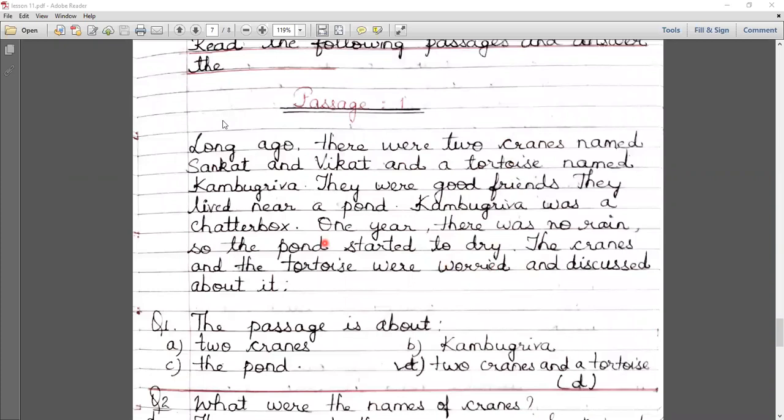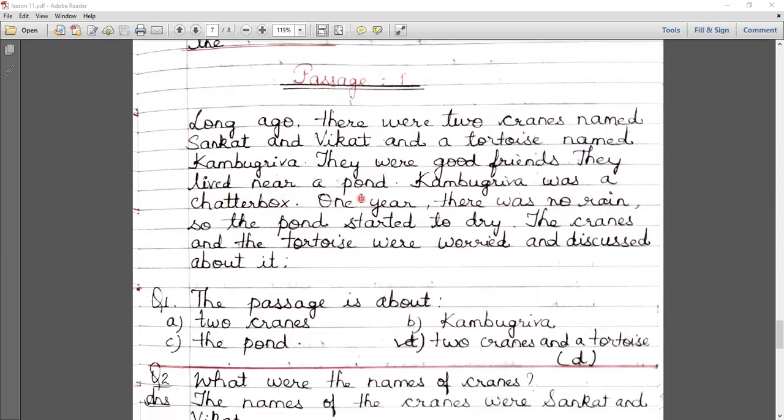I hope you have understood this activity. Now let's start the comprehension of this lesson. Let's start. Long ago there were two cranes named Sankat and Vikant and a tortoise named Kambugriva. They were good friends. Kambugriva was a chatterbox. Kambugriva was a chatterbox - he talked too much, as we also talked about.